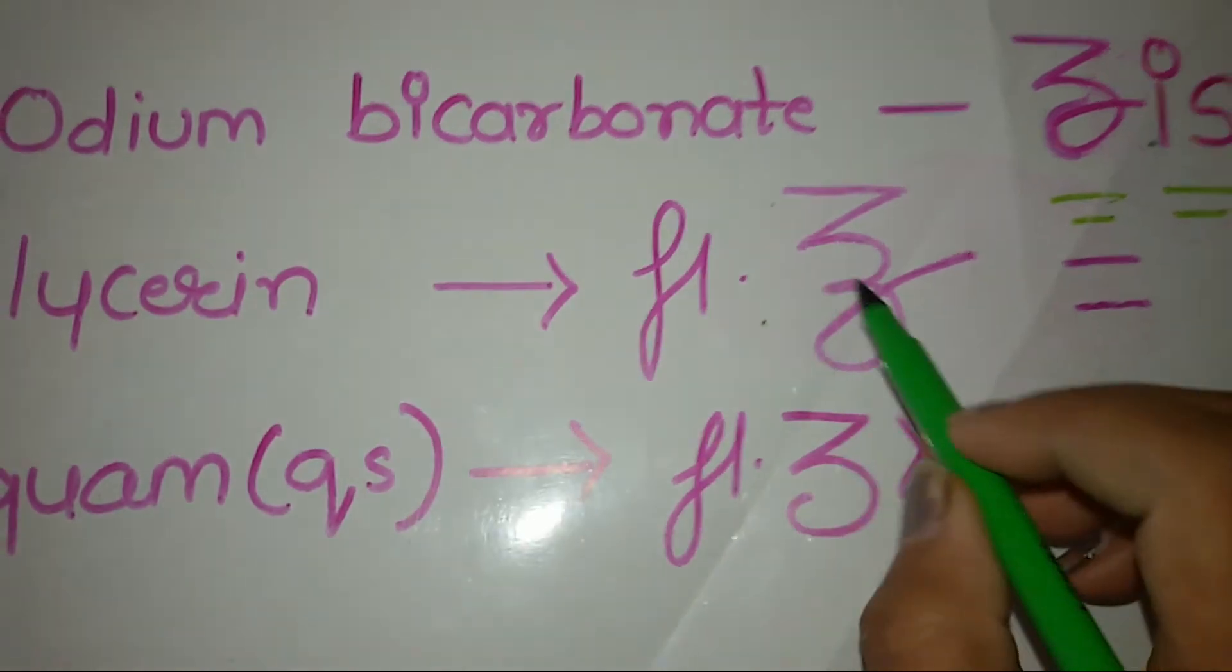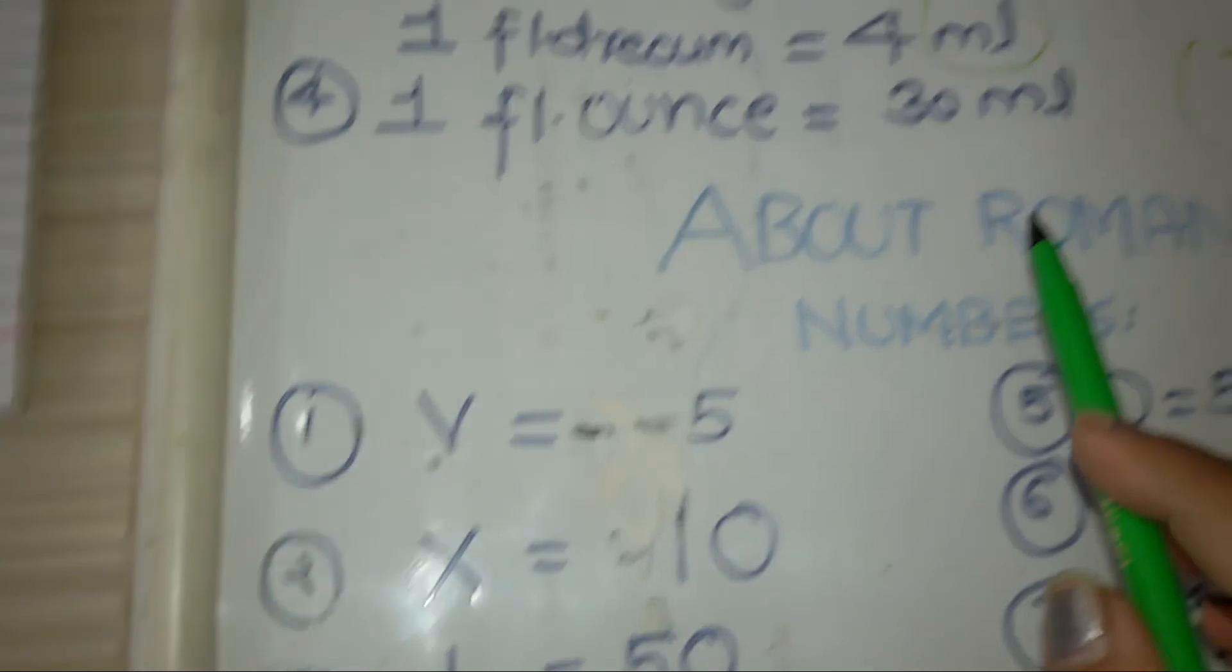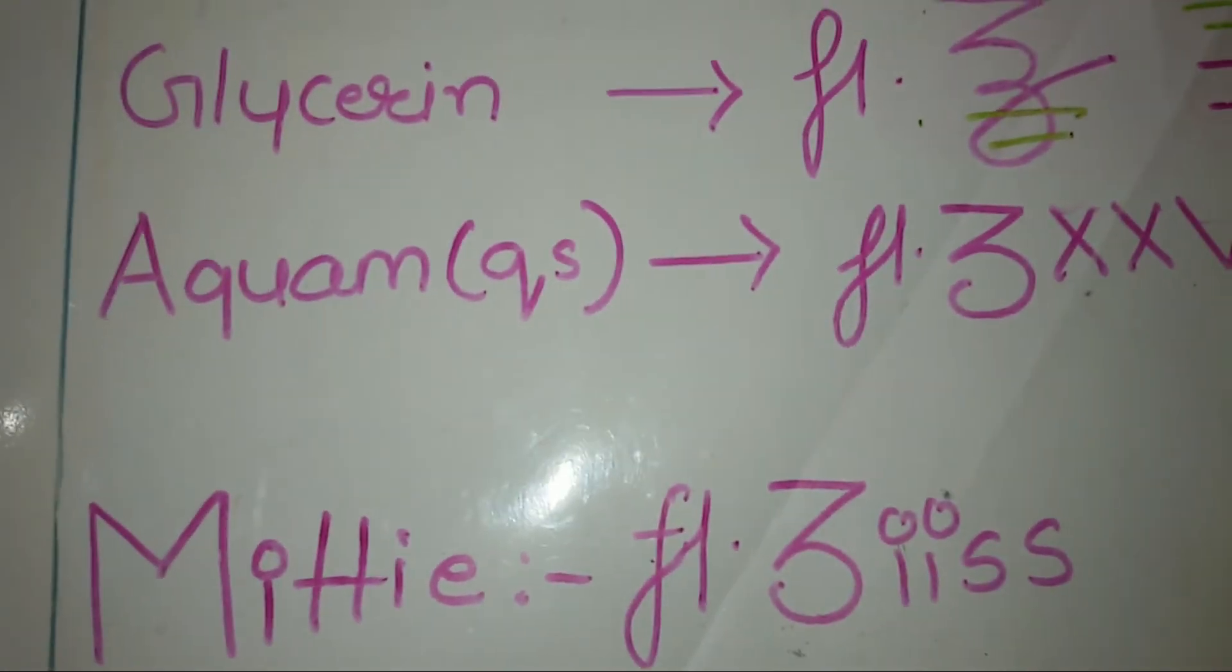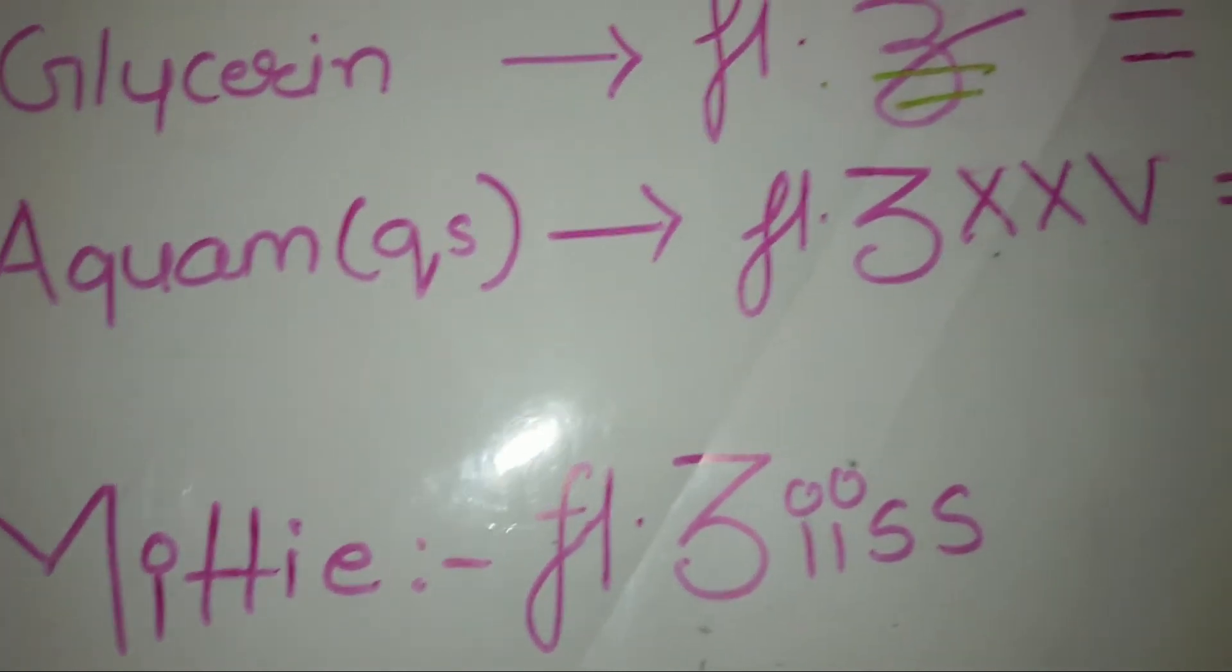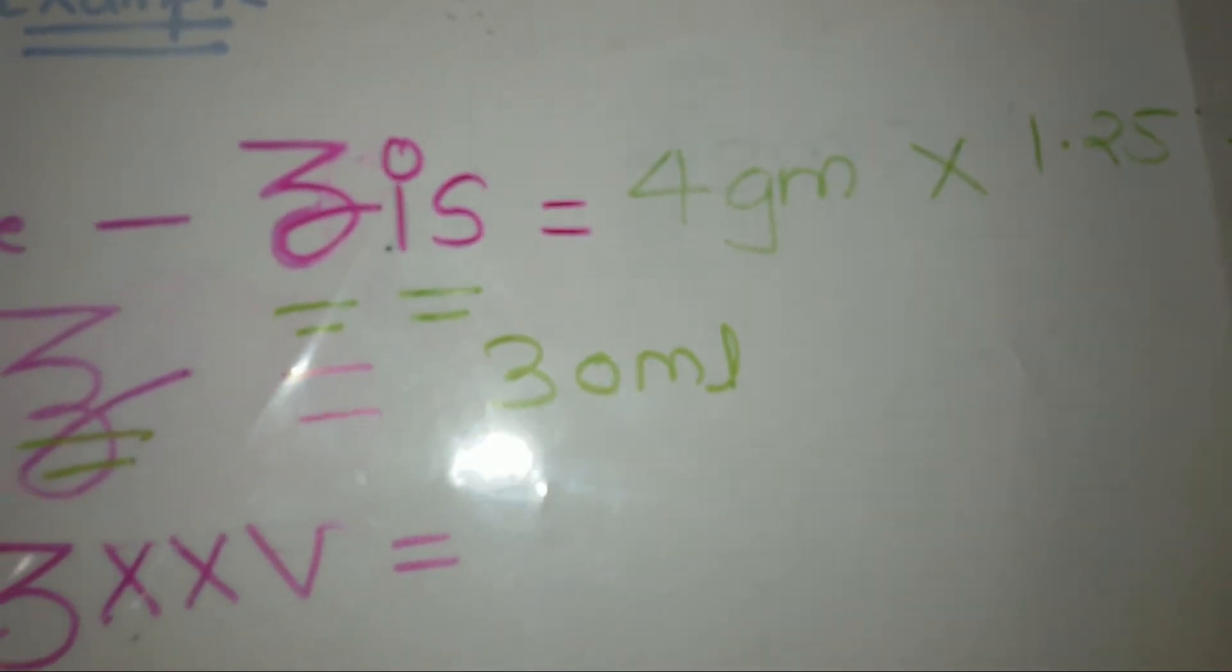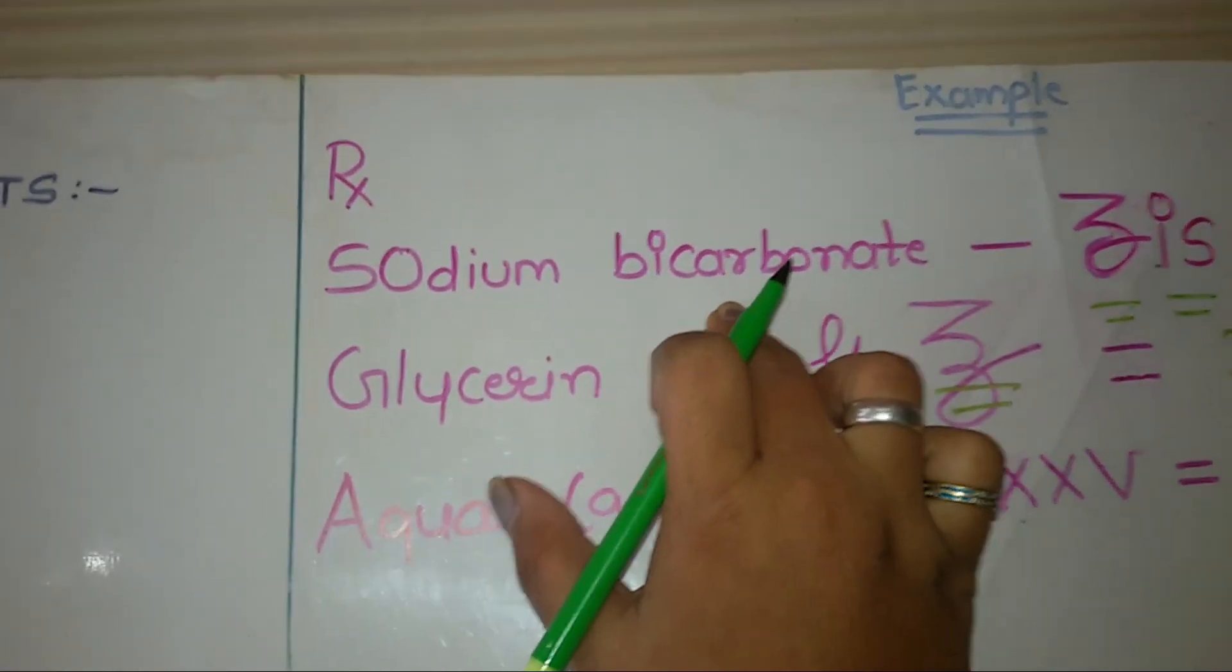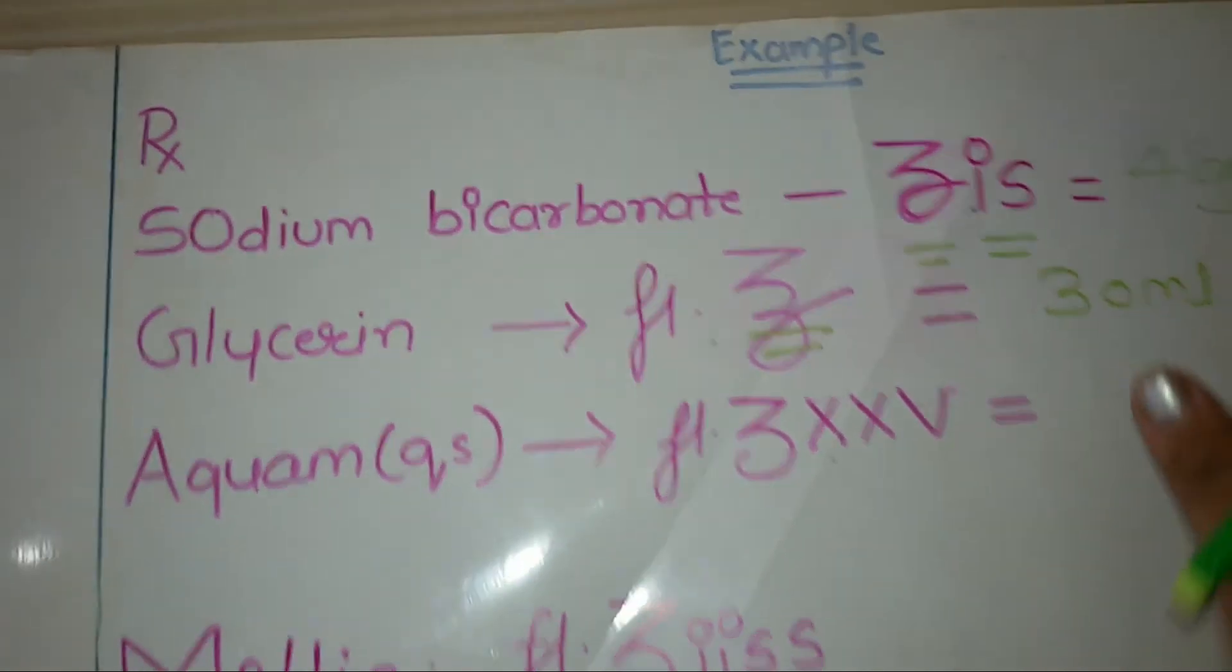Here it is fluid ounces. So one fluid ounce is equivalent to 30 ml. Therefore 4 into 1.25 equals 5 gram. We had taken here gram because sodium bicarbonate is a solid and measured in gram.